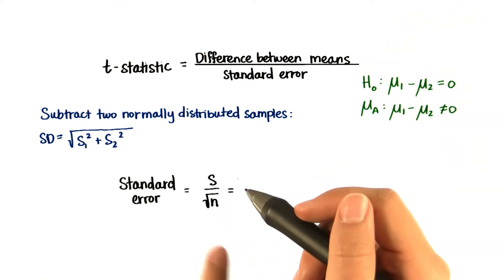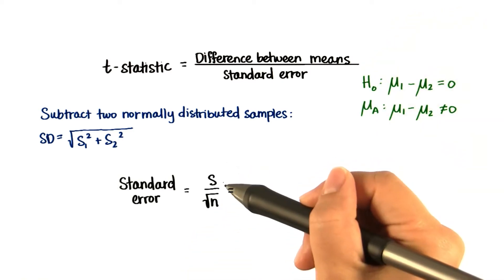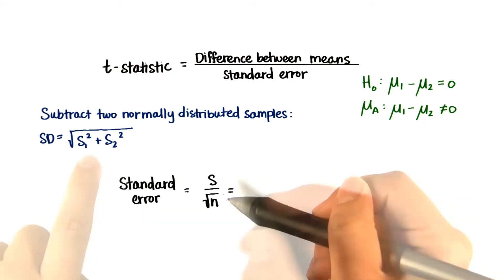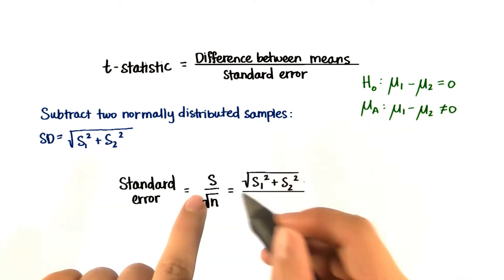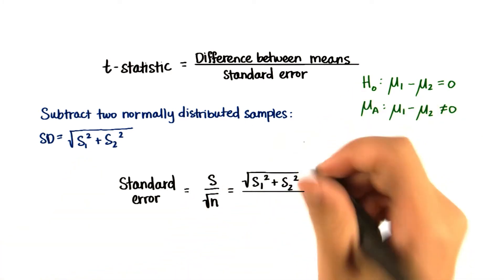Remember how before with a one sample t-test, our standard error was s divided by root n? Well now we're using this for s, because it's based on two samples instead of one. So we can replace this s with our new one.